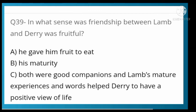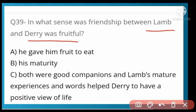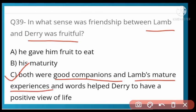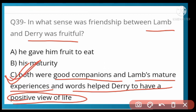In what sense was the friendship between Lamb and Derry fruitful? Options: he gave him fruit to eat, his maturity, both were good companions and Lamb's mature experience helped Derry have a positive view of life. Option D is correct — both became friends and companions, and Lamb's mature experience and words helped Derry become positive in life.